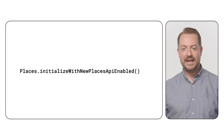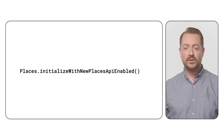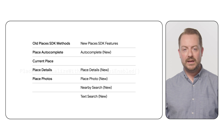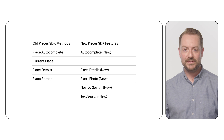Initialize the SDK by calling the places.initialize with new Places API enabled method at the application level. You'll only need to do this once for the entire app. If you're an existing customer, great news — no migration is needed after changing the initialization call.